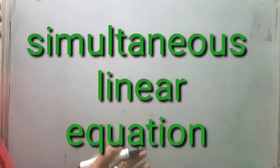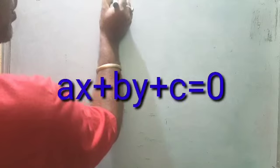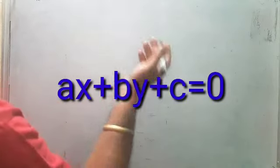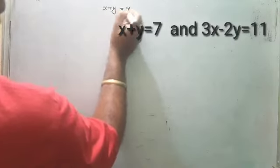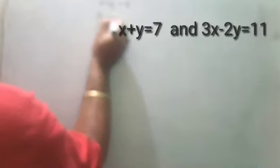Today we start simultaneous linear equations — finding x and y by substitution method. First, understand what a simultaneous linear equation is. The general form is ax plus by plus c is equal to 0, where a, b, and c are numbers (may be negative or positive) and x and y are the variables. This is a linear equation, meaning degree 1. For example, suppose x plus y is equal to 7 and 3x minus 2y is equal to 11.